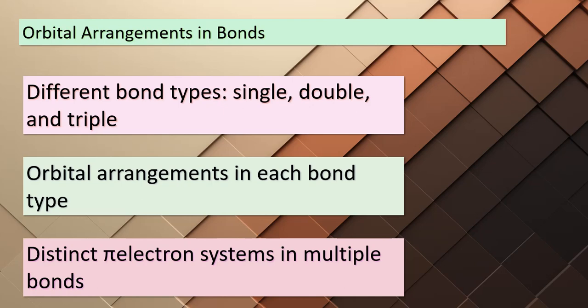When it comes to double bonds, there's not only a sigma bond but also a pi bond, which involves the overlap of p orbitals. Triple bonds are even more fascinating, as they consist of a sigma bond and two pi bonds. The arrangement of these orbitals plays a crucial role in how these bonds influence molecule structures and reactivity. Now let's delve deeper and explore instances where pi electrons exhibit delocalization.